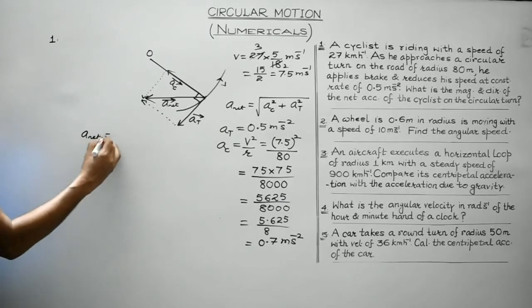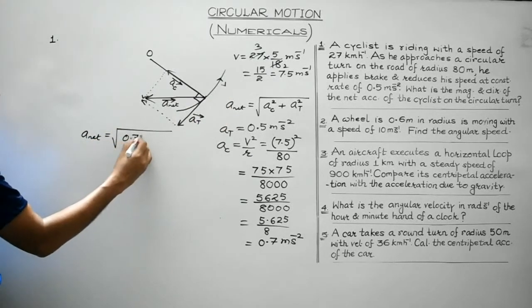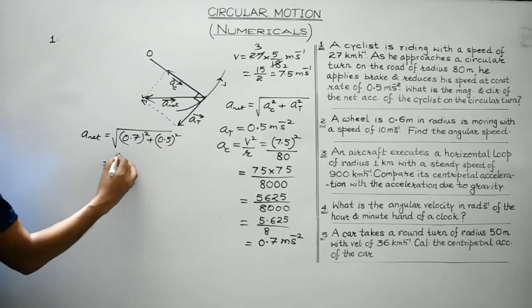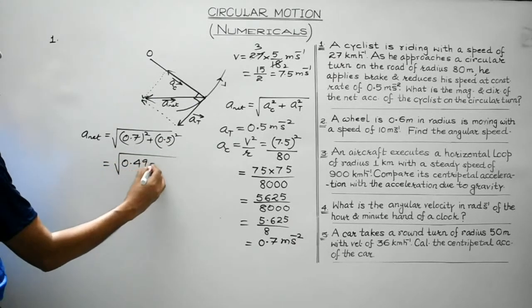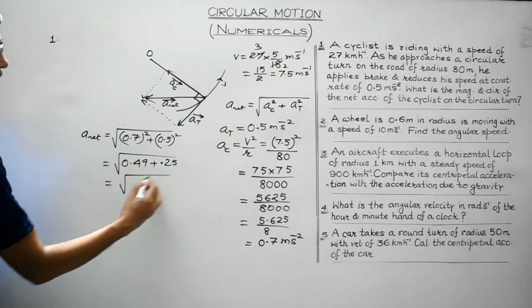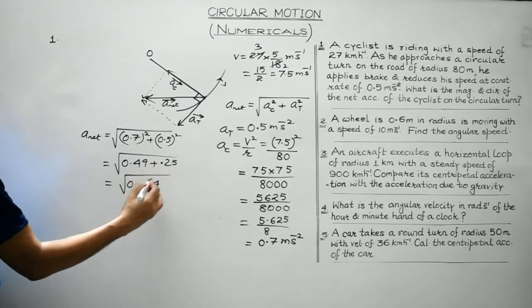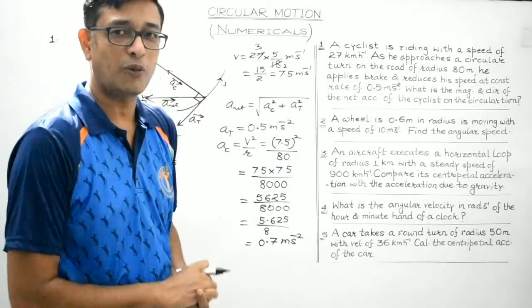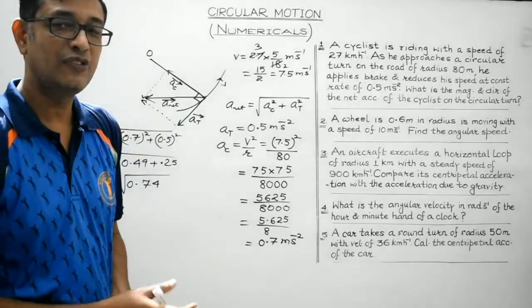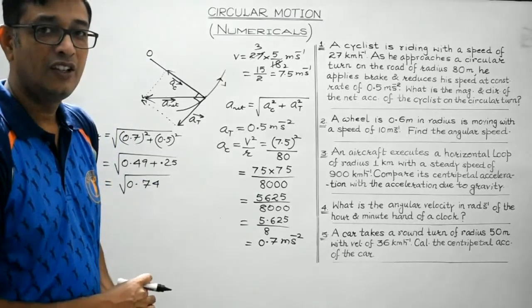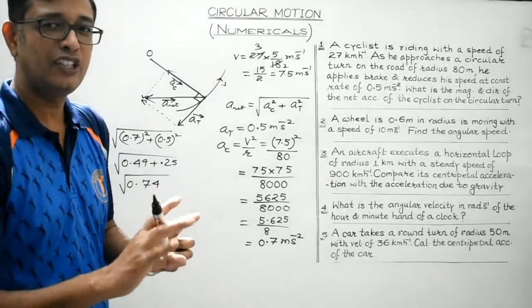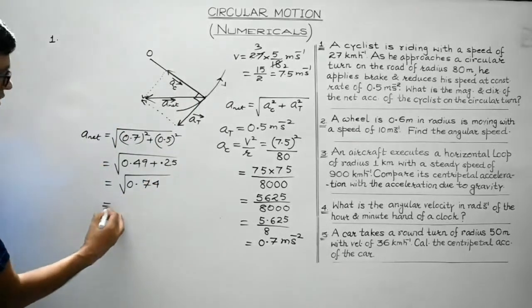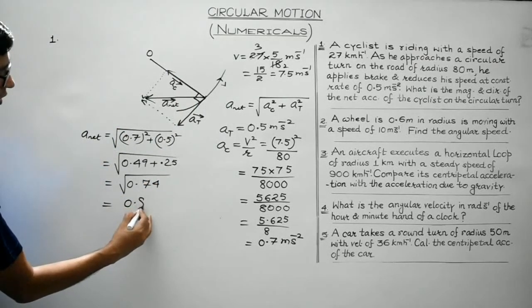Substituting the values, the net acceleration equals the square root of AC² plus AT², which is the square root of 0.7² plus 0.5² = square root of 0.49 plus 0.25 = square root of 0.74. Since 0.8² = 0.64 and 0.9² = 0.81, 0.74 lies between them, so the net acceleration is approximately 0.86 metres per second square.